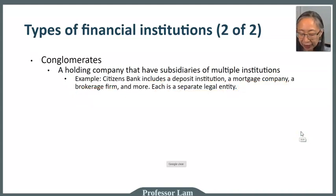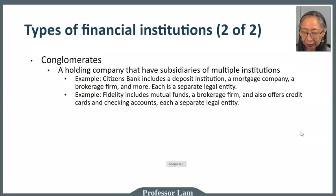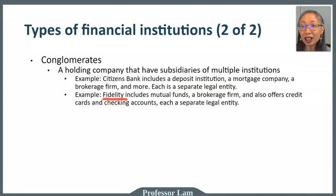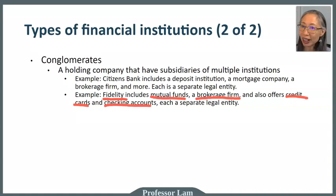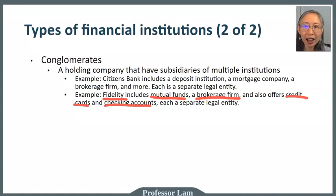Another example: Fidelity started as a mutual fund company and is an investment company, but they also have a brokerage firm — two separate legal entities. They also offer credit cards and checking accounts through a bank under the Fidelity name. You could have multiple Fidelity accounts accessible under one website, switching from one account to the next, but they are legally separate entities.